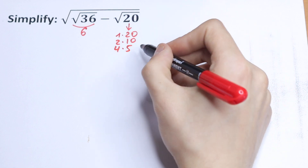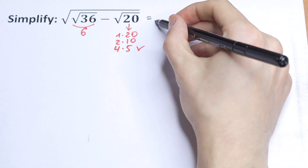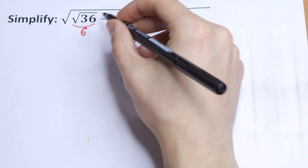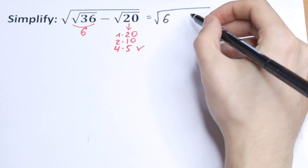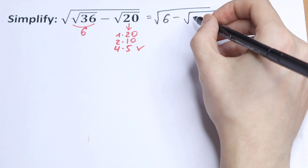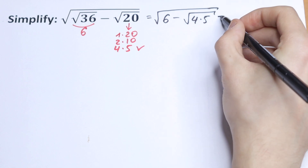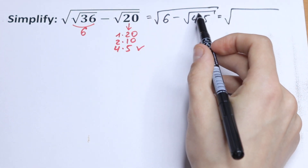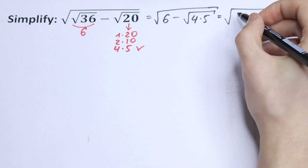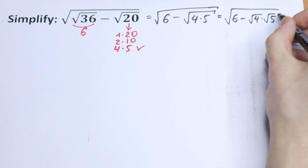The best way to express 20 is the third way — I'll show why a little bit later. So it will be equal to the square root of 6, which equals 6, minus the square root of 4 times 5. Using the product rule for square roots, we can write this as the square root of 4 times the square root of 5, giving us 6 minus square root of 4 times square root of 5.